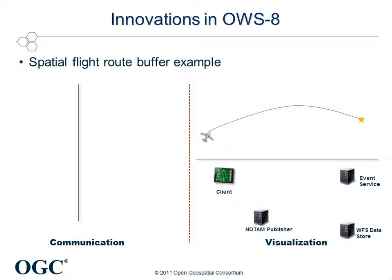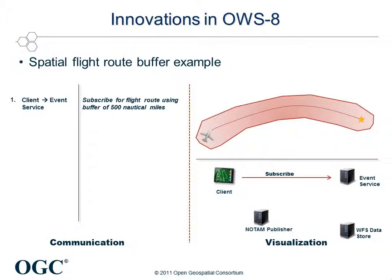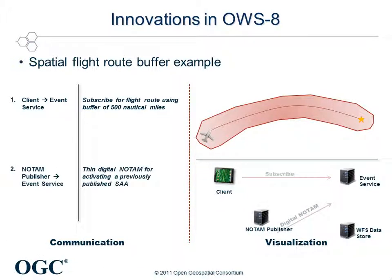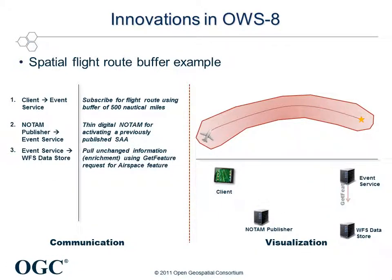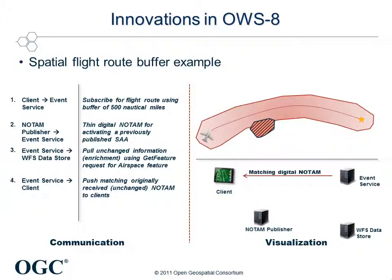One of the major innovations of the OWS 8 event architecture is the event enrichment feature. In the first step, a client subscribes for a buffer of 500 nautical miles around the flight route. Triggered by the change of a special activity airspace, a D-NOTEM for the activation is pushed to the event service. Typically, digital NOTEMs only contain the IDs of features, but not their spatial extent. Hence, the event service needs to pull additional information from a WFS to be able to apply the spatial buffer filter. Once the information has been requested, the event service checks the spatial filter and forwards the original D-NOTEM to the client.